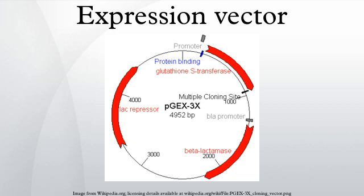Saccharomyces cerevisiae is particularly widely used for protein expression studies in yeast, for example in the yeast two-hybrid system for the study of protein-protein interaction. The vectors used in the yeast two-hybrid system contain fusion partners for two cloned genes that allow the transcription of a reporter gene when there is interaction between the two proteins expressed from the cloned genes.